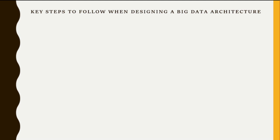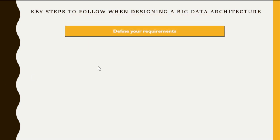Here are the key steps to follow when designing a big data architecture. It is important to follow a systematic approach to ensure that the architecture is well designed and meets the requirements of the project. The first step is to define your requirements — identify the data sources, the type of data to be processed, and the desired outcomes.